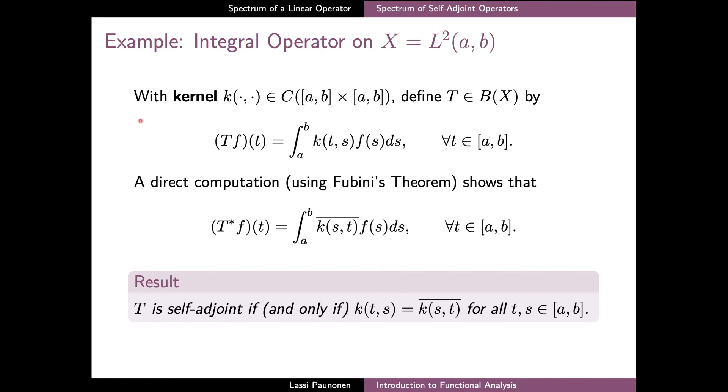We assume that the kernel of the integral operator is a uniformly continuous function of two variables, and we define T so that Tf is a function whose value at t is given as the integral of the product of k and f over s.